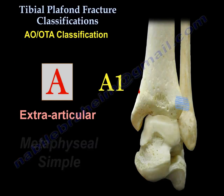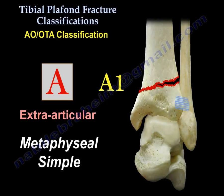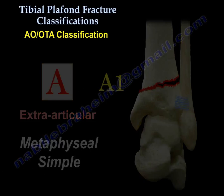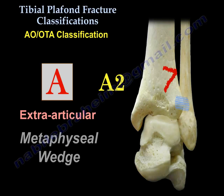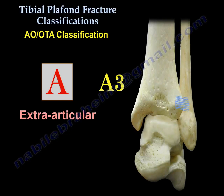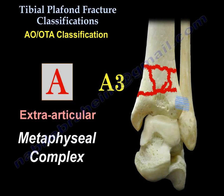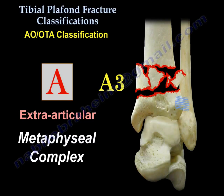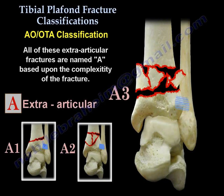The extraarticular fracture is divided into a simple fracture, a metaphyseal wedge fracture, or a complex metaphyseal fracture. All these extraarticular fractures are named A — they can be A1, A2, or A3 as you advance the complexity of the fracture.